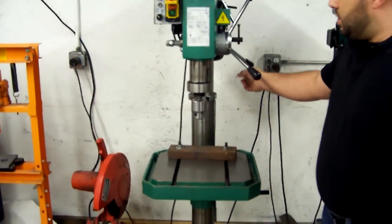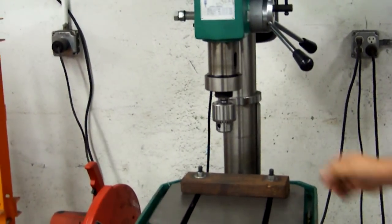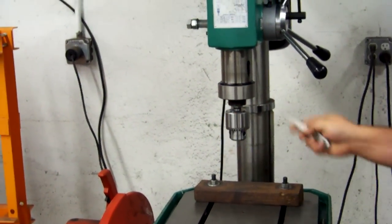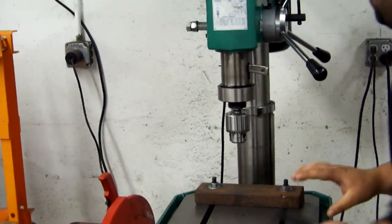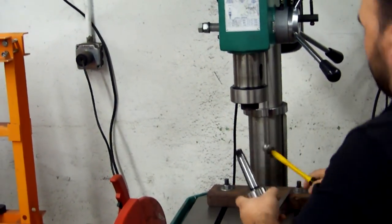For our drilling machine, it seems to be a Grizzly with a Morse taper. You'll take the drift key and a hammer, align the slot, and knock it loose, like so.